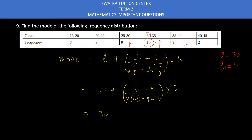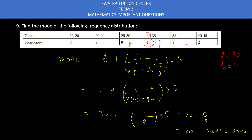This gives you 30 plus 1 divided by — 20 minus 9 is 11, and 11 minus 3 is 8 — into 5. So you have 30 plus 5 over 8. You can either take LCM or divide 5 by 8, which gives you 0.625. Adding these two gives you 30.625.